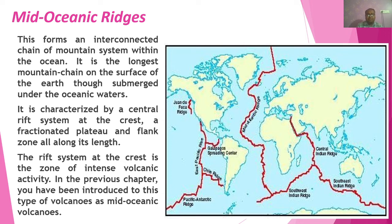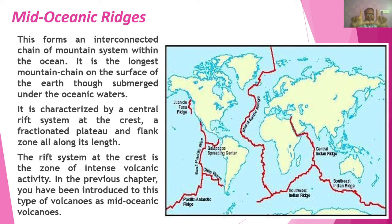The mid-oceanic ridge is characterized by a central rift system at the crest, a fractionated plateau, and flank zones all along its length. A rift means two upland mountains with one submerged area between them — like a rift valley. The rift system at the crest is a zone of intense volcanic activity. We also discussed volcanoes and the mid-oceanic volcanic system in the previous chapter. This kind of ridge structure is visible inside the oceanic structure.